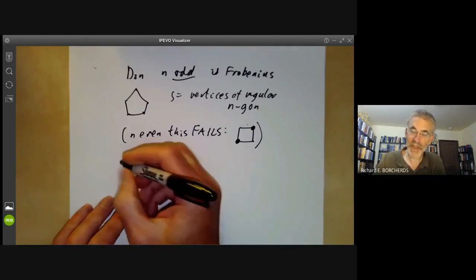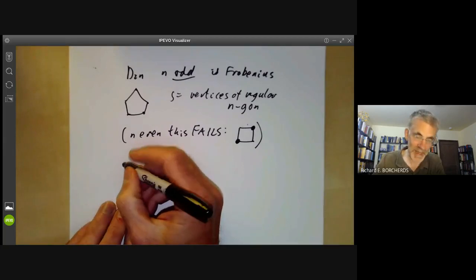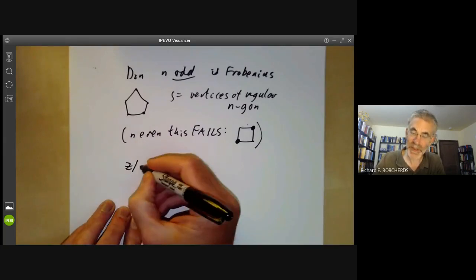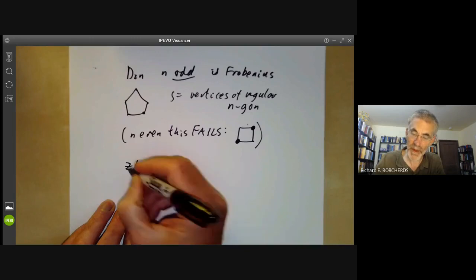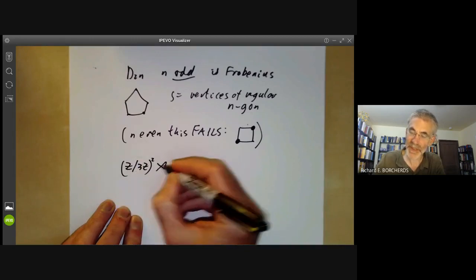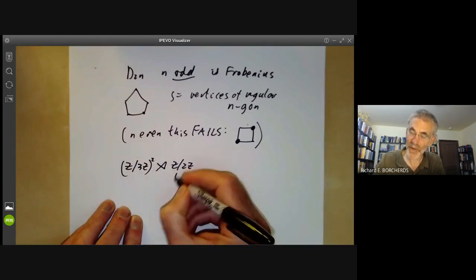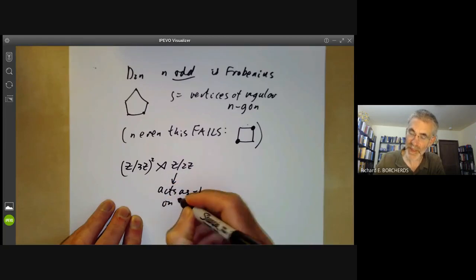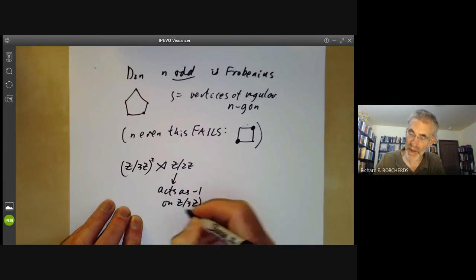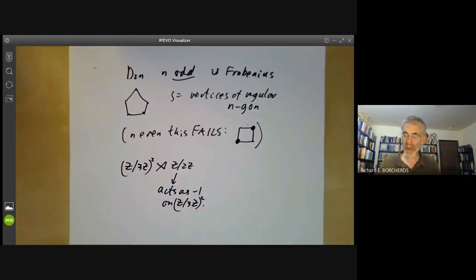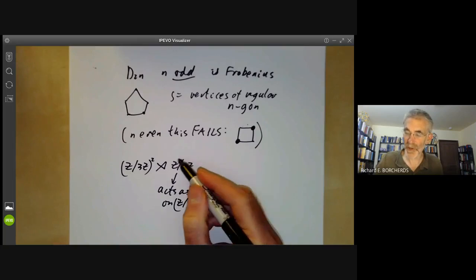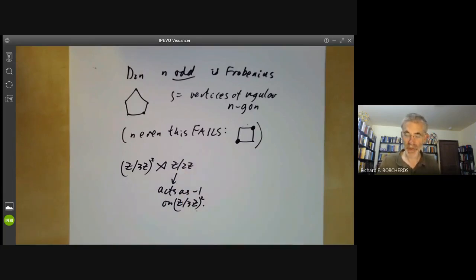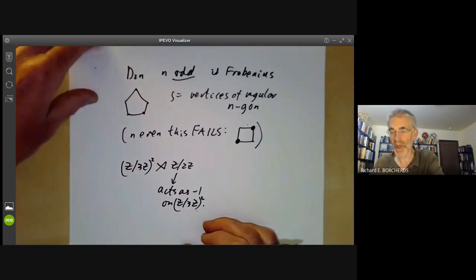Another example is the example of the group of order 18 we had earlier. So we took Z/3Z squared, semi-direct product Z/2Z, where you remember this acts as minus 1 on Z modulo 3Z squared. And you can see this is a Frobenius group acting on, say, all the conjugates of this group Z modulo 2Z. So Frobenius groups are actually reasonably common.